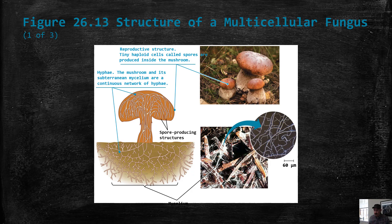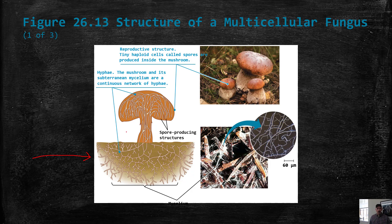Fungi are a very diverse group. Underground there's a lot of mycelium — all these hyphae with lots of surface area — breaking down organic material in the soil. One of the major roles of fungi in the environment is to decompose organic matter like wood. When they reproduce, the kinds that make mushrooms form structures that produce spores, which fall on the ground and grow into more hyphae.